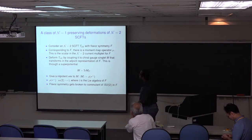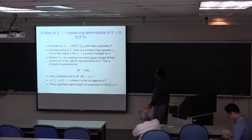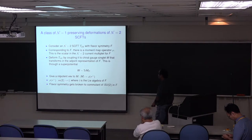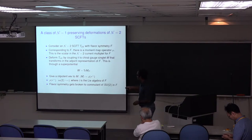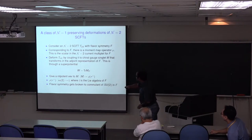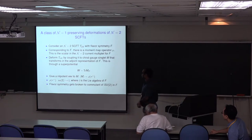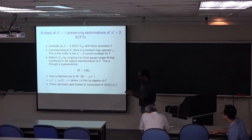What we do next is give M a nilpotent vev. This nilpotent vev is rho(sigma_+), where it gives an SU(2) embedding into the Lie algebra F of the flavor symmetry. By nilpotent, sigma_+ is the raising operator for this SU(2), and one way to think about this nilpotent embedding is that it tells us how the fundamental representation of F decomposes into representations of SU(2). Then rho(sigma_+) is just the representation of the raising operator on that fundamental representation of F.